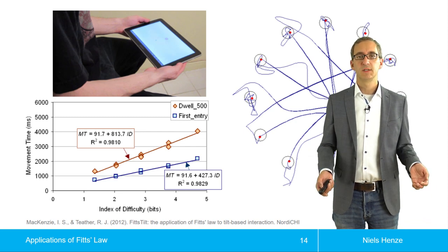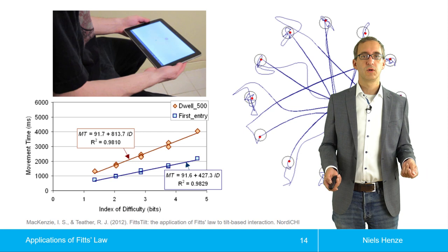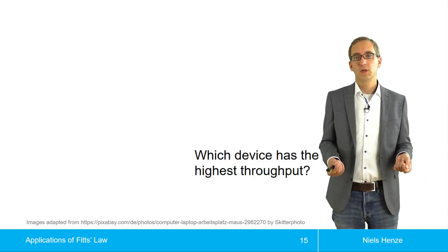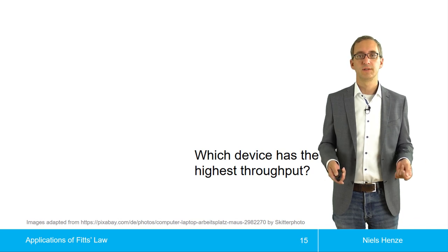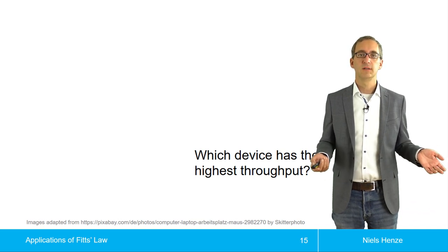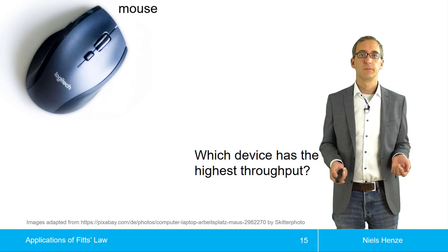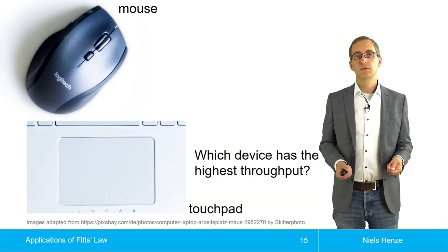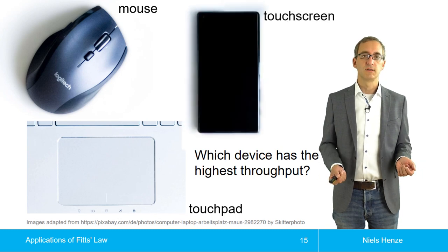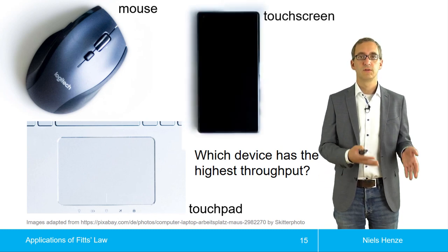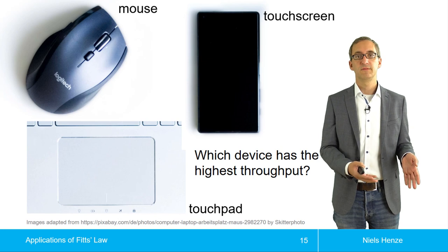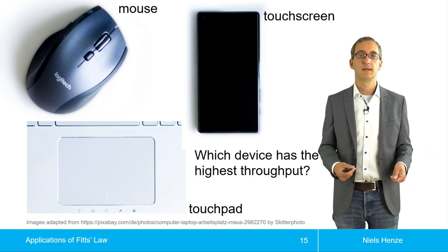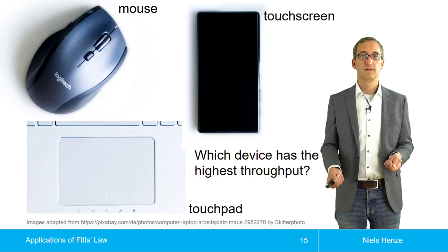Typically we don't use tablets to steer pointers — we use other types of input devices. But we can still wonder about the throughput for devices like the mouse, a touchpad, or smartphones with touchscreens. For all these devices we can determine the throughput, and if we have the throughput for multiple devices, we can use it to say that one device is better than another.